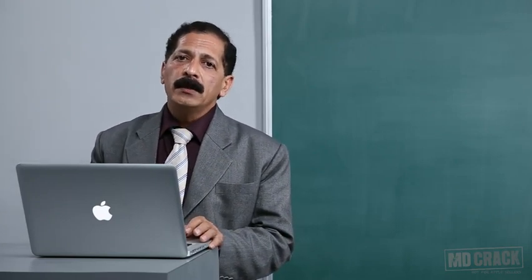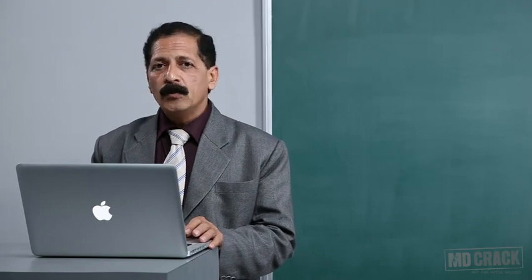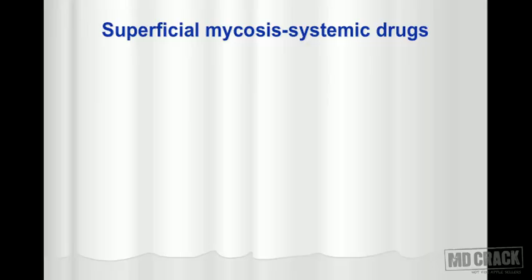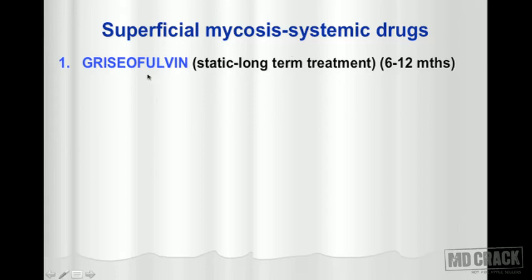We now move on to drugs used for superficial mycoses. For severe superficial fungal infections where topical treatment is insufficient, systemic drugs are needed. The first such drug is griseofulvin. It is important to remember that griseofulvin is fungistatic, not fungicidal, and because it is a static agent the duration of treatment is very long — 6 to 12 months.